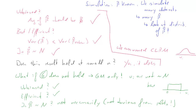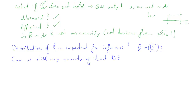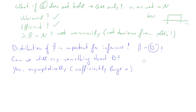Without knowing what the distribution of beta hat is, how are we supposed to derive a hypothesis test? It turns out, fortunately, that yes, we can say something about the distribution — but this is dependent on having sufficiently large n. We can asymptotically say something about the distribution. So we need large enough n — the sample size now becomes important.